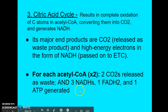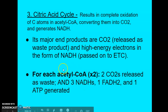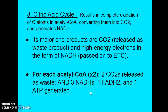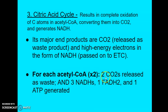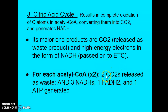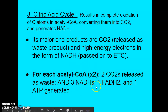As far as inputs and outputs: we just came from pyruvate oxidation, where we oxidized pyruvate into two molecules of acetyl-CoA. For the citric acid cycle, we have two acetyl-CoA molecules per glucose going into the matrix — we're still in the matrix from pyruvate oxidation. Now this is per acetyl-CoA, so remember there are two of them and we'll have to double all of these numbers. For each acetyl-CoA, we have two carbon dioxides released, three NADHs generated, one FADH2, and one ATP.